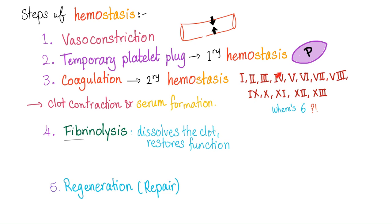One of the checks and balances are protein C and protein S. However, in Factor V Leiden, Factor V resists the checks and balances. It's overactive — coagulation is over-activated. That's why patients have a very high risk of thrombosis, sometimes 50 times the general population.